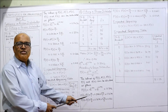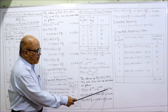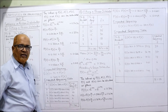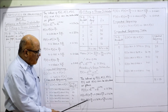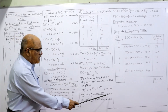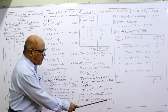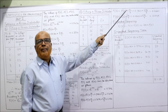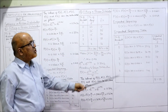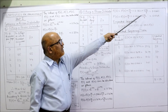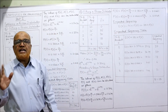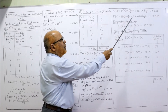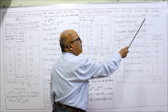P(1) equals P(0) times M divided by 1 — that is 0.3716 times 0.99 divided by 1 — giving 0.3679. P(2) equals P(1) times M divided by 2 — that is 0.3679 times 0.99 divided by 2 — giving 0.1821. P(3) equals P(2) times M divided by 3 — that is 0.1821 times 0.99 divided by 3 — giving 0.0601. P(4) equals P(3) times M divided by 4 — that is 0.0601 times 0.99 divided by 4 — giving 0.0149.